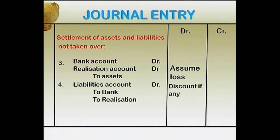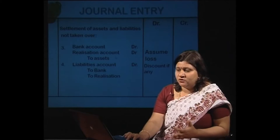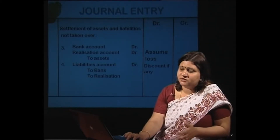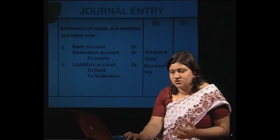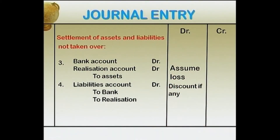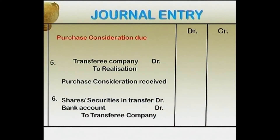The third entry is settlement of assets and liabilities not taken over: Bank Account debit, Realization Account debit, to Assets. Realization account is debited because there is a loss on the sale of such assets — they are sold below book value. For liabilities being paid off at a discount: Liabilities Account debit, to Bank, to Realization — here we have accounted for the discount on settlement.